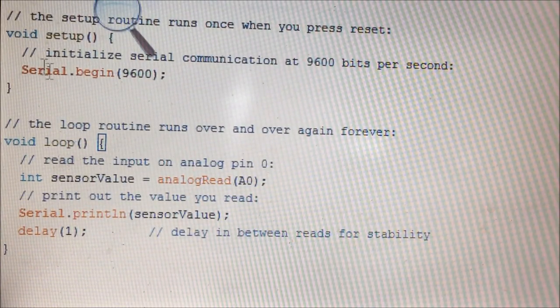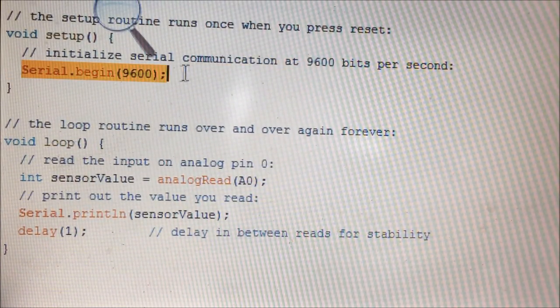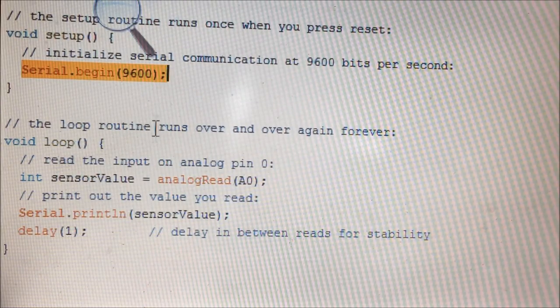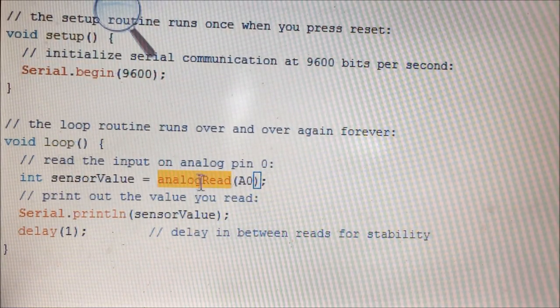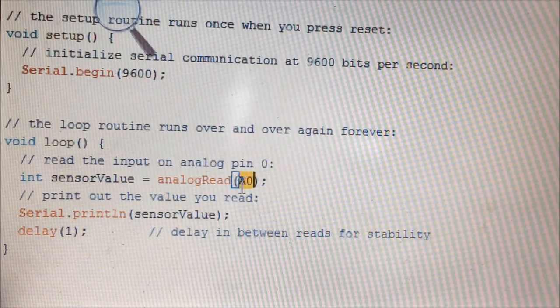If you come down, you can see we are setting up Serial.begin for 9600 baud rate. And then here I am reading the analog value from the channel A0. And I am storing that value as an integer into a variable called sensorValue.